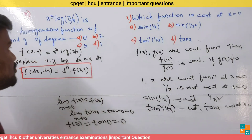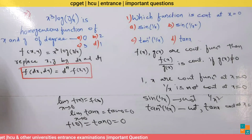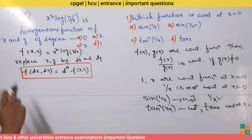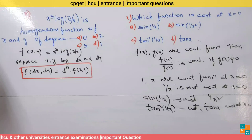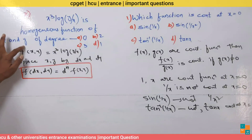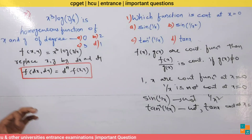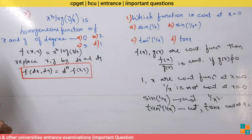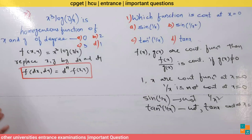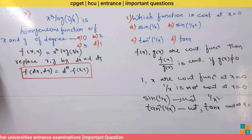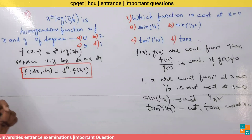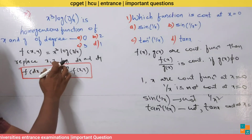Now the second question: x³·log(y/x) is a homogeneous function of x and y — what is its degree? We need to find the degree of this homogeneous function. Let f(x, y) equals x³·log(y/x).